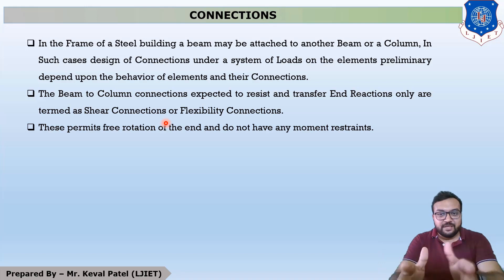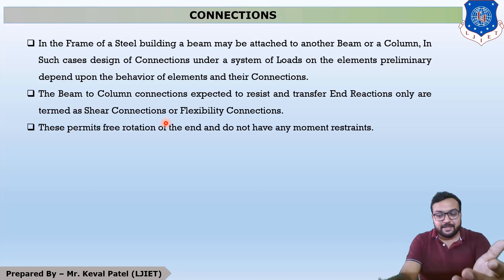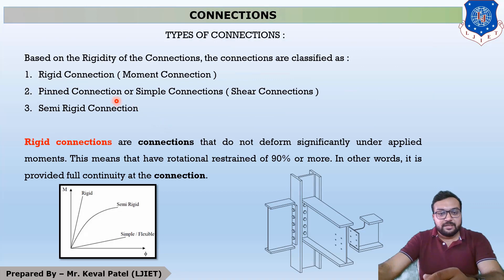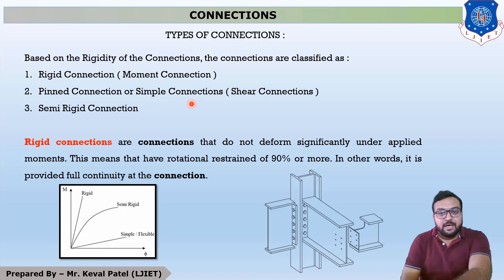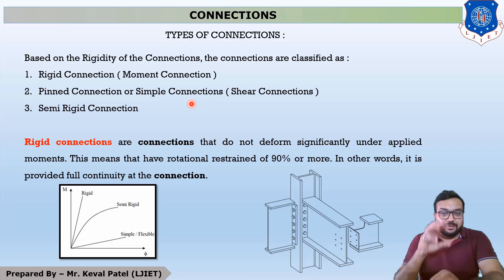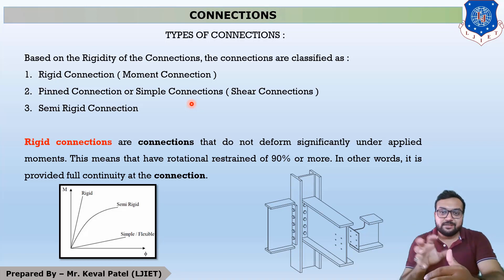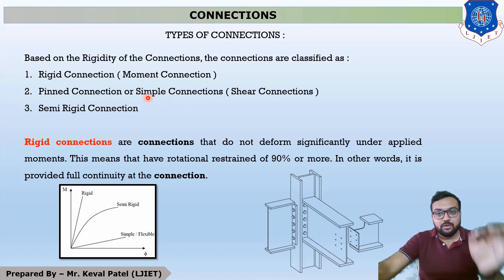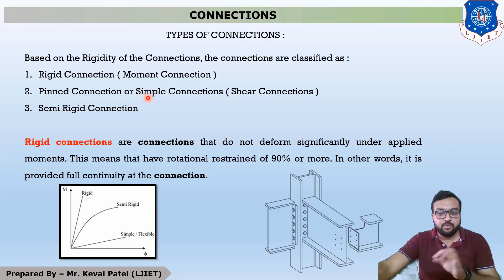The fixed support takes horizontal reaction, vertical reaction, as well as moment. Second type is pin connection, also called simple connection, corresponding to simple supports like hinge and roller. These supports take only reactions — not moment. So pin connections only resist shear forces, not restraining the bending moment.